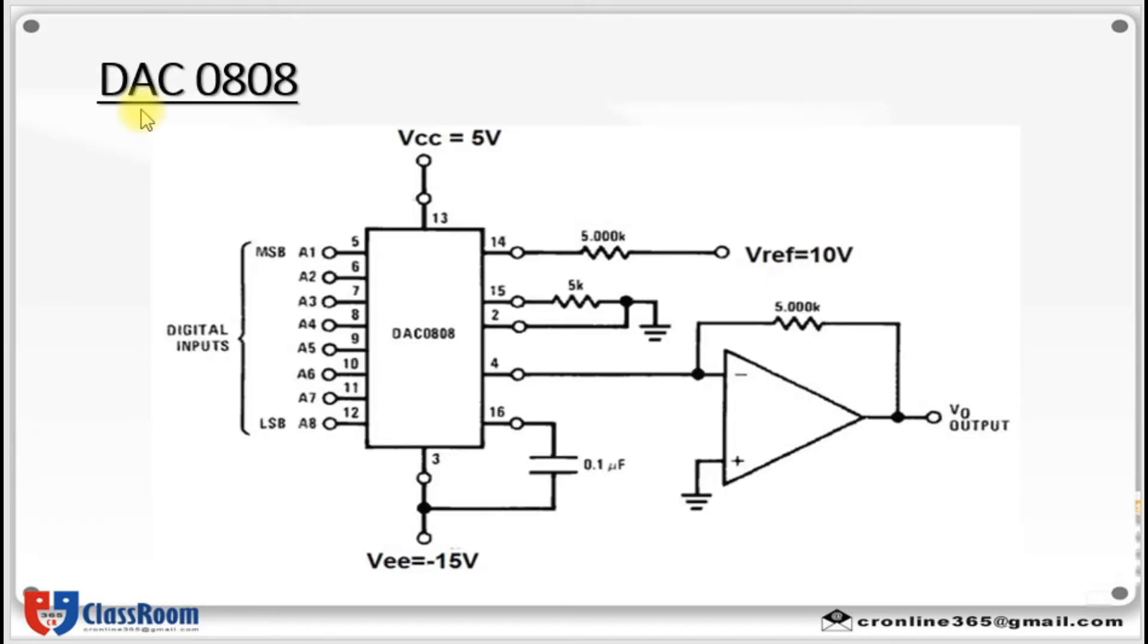So let's see DAC 0808 diagram first. This shows DAC 0808. It has 8 digital inputs, which I have mentioned as A1 to A8. Then we have VCC supply which is given as 5 volt. Then we have V reference plus and V reference minus. V reference is taken as 10 volt and by means of a 5k resistor it is connected to DAC 0808. So I reference is set as 2 milliampere.